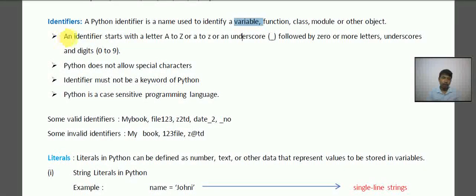An identifier starts with a letter A to Z or a to z, or an underscore. So these are the starting characters. Next, followed by zero or more letters,